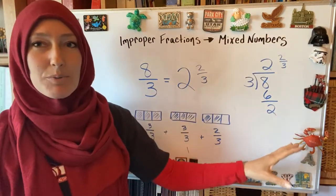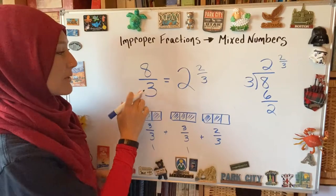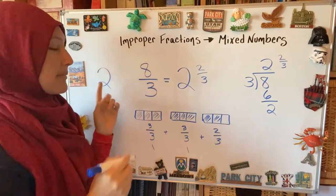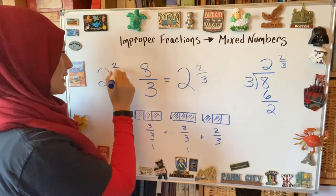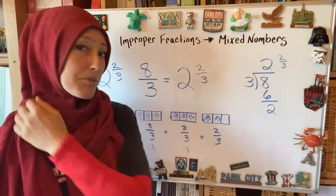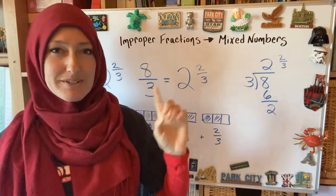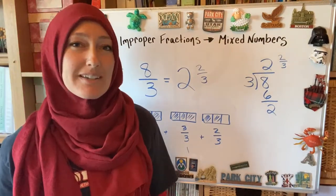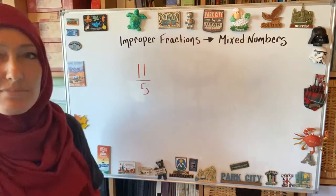You can write the division out or do a lot of it in your head. Mentally, think: 3 times what gets me close to 8? Three times 2 is 6. What's the difference between 6 and 8? There's 2. And it's going to be a two-thirds-sized part. So three different ways to manipulate this. Going the other way is just as important. You can't learn this by watching — get some paper and try it. If you don't need an explanation, skip ahead and check your work.